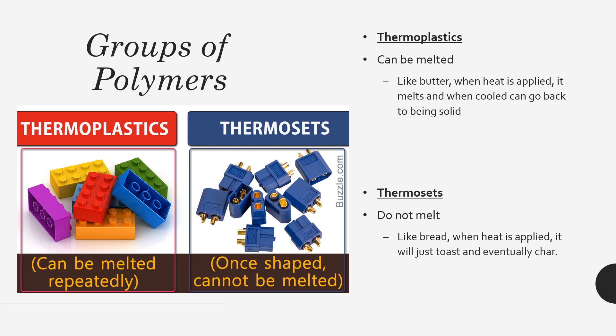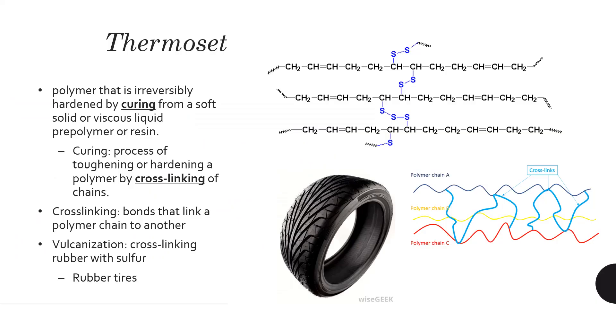On the other hand, we have thermosets, which are polymers that do not melt. Think of bread as an analogy — when you apply heat it will just toast, and if you keep applying heat it will char and turn to ash. So instead of melting, thermosets just degrade when heat is applied. Once they are cured and hardened, applying heat will cause them to degrade rather than melt.